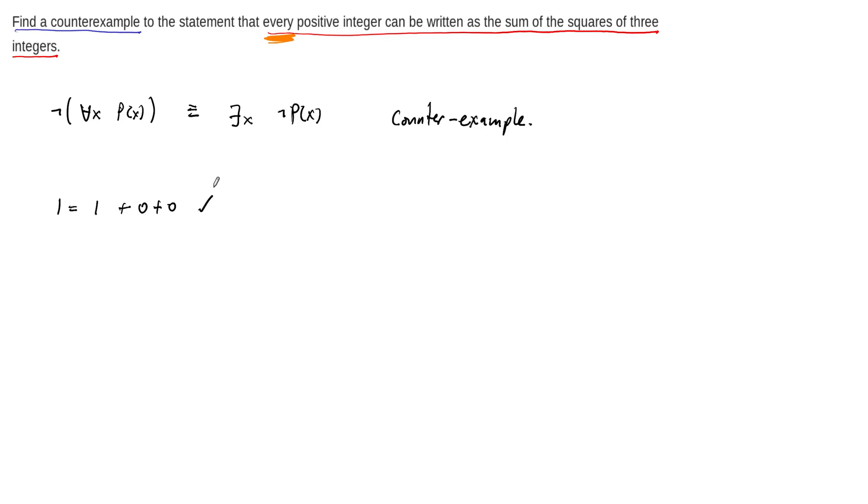All right, so I'm going to do this just by exhaustive method. By the way, the squares of the integers are zero, one, four, right, nine, etc. We're not going to have to go that far, but these are the squares of the integers. So even if you have negative one or negative two, you go zero, one, four, nine, etc.